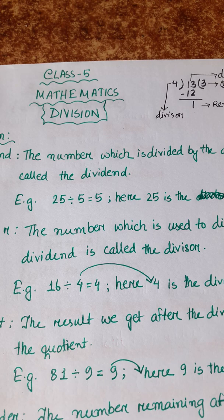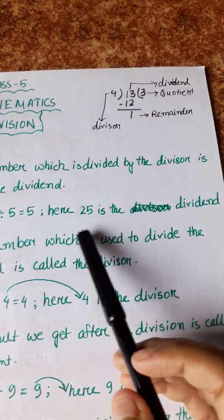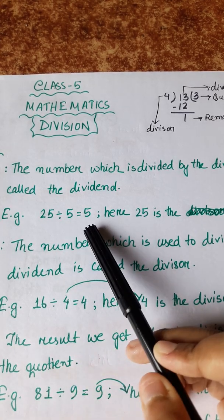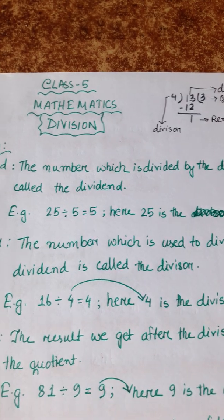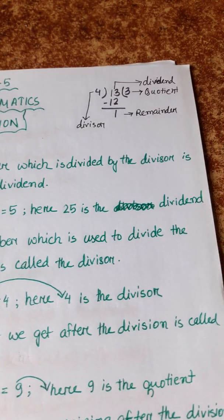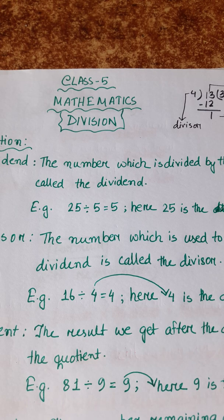The number which is divided by the divisor is called the Dividend. Here we have 25 divided by the divisor. The number which is divided is called the Divisor.